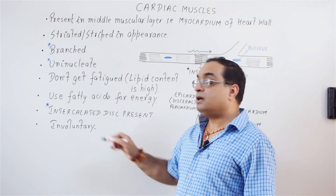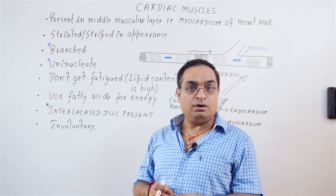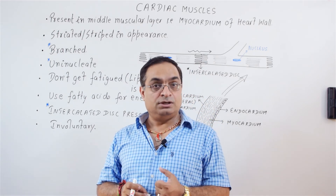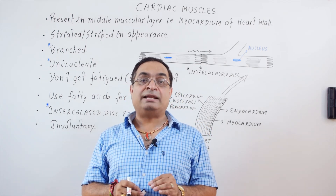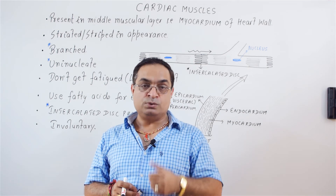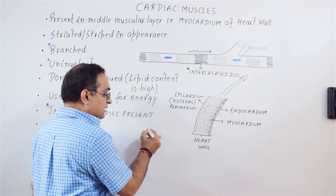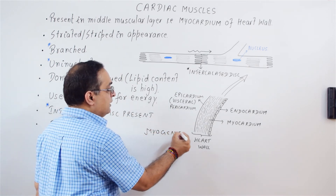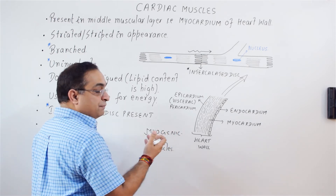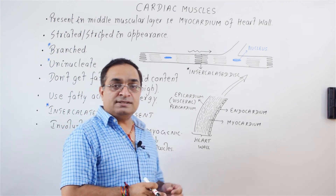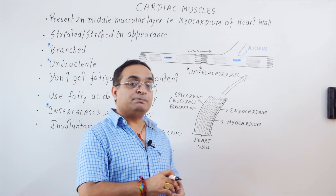Cardiac muscle fibers are involuntary, meaning they are not under your conscious control. Then how do cardiac muscle fibers contract? We know that the heart is myogenic in the case of vertebrates and molluscs — vertebrates includes humans. So in humans the heart is myogenic. The term myogenic means myo refers to muscles and genic refers to generation. That means certain cardiac muscle fibers get modified to form the pacemaker of the heart.